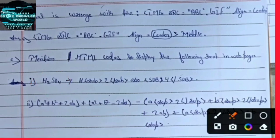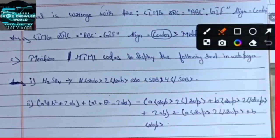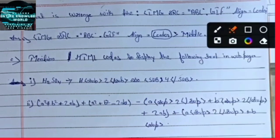उसके बाद C number में इस तरह का लिखने के लिए कौनसा command लाएंगे। तो इस तरह से हम command से लिख सकते हैं, और यहां पे दिया गया है A square plus B square plus 2AB। तो इस तरह से लिखने के लिए हम किस तरह का command लाएंगे — we will do this command.